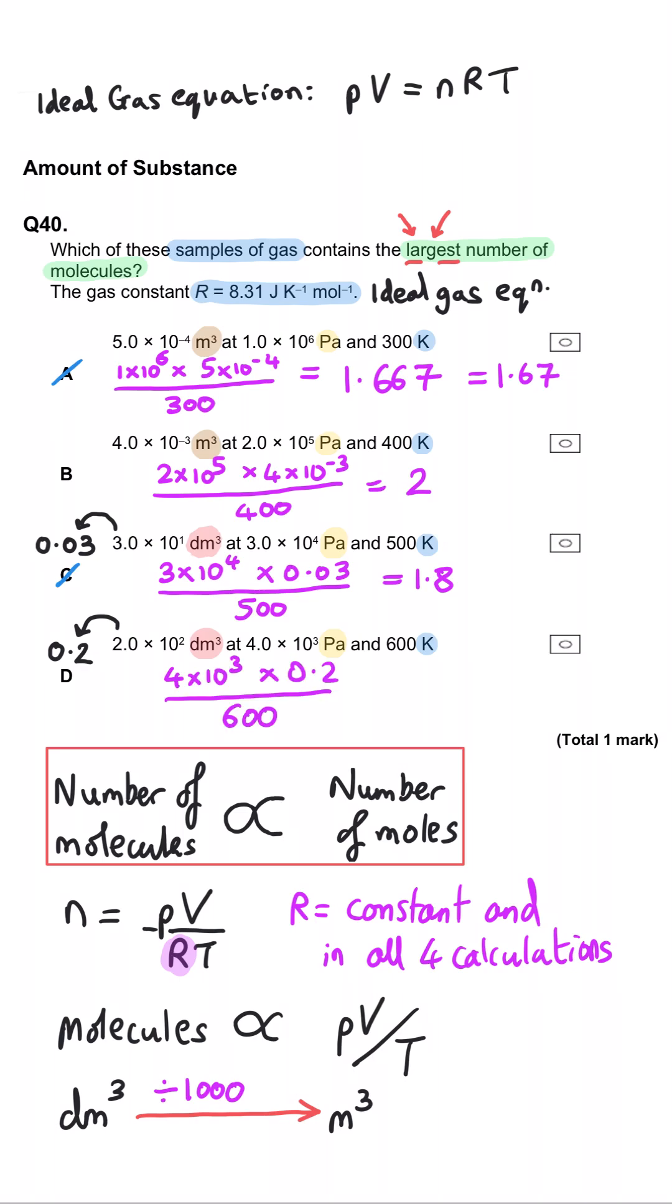And then for D, we plug the numbers in and we get 1.33, which is even smaller. And so we can see that B is the correct answer because it has a value proportional to the number of moles that is biggest, and that means it will have the largest number of molecules.